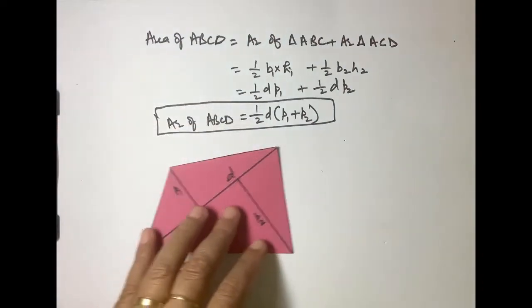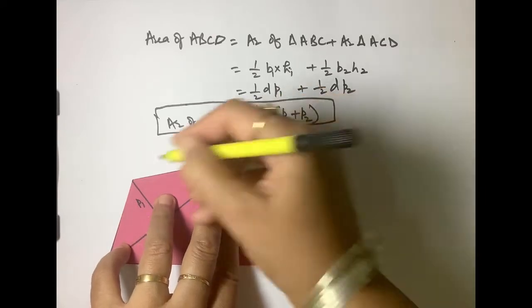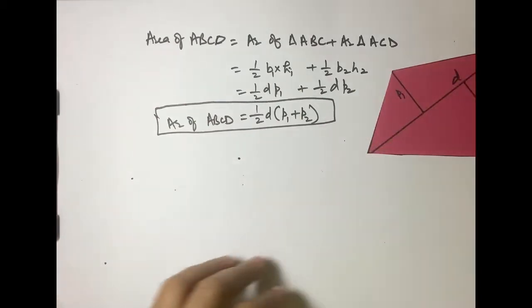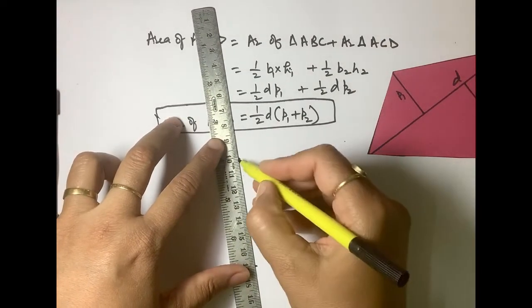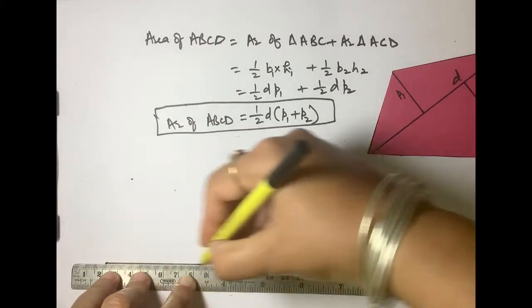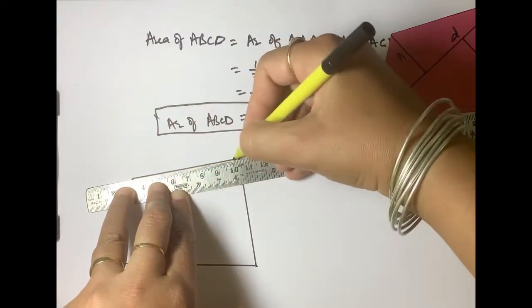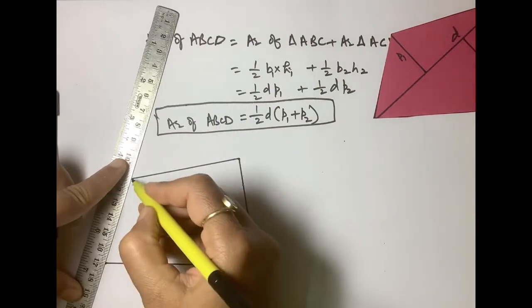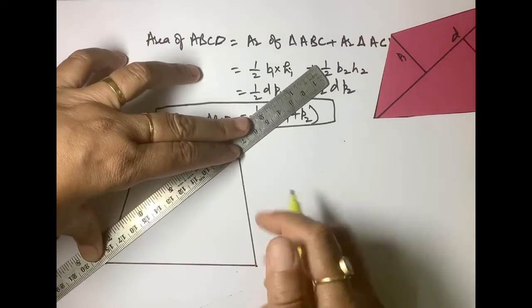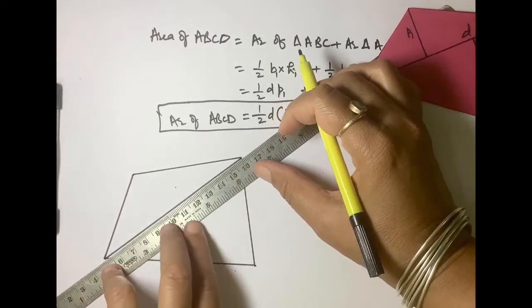Now we are going to draw one more quadrilateral to show exactly equal quadrilateral. You mark diagonal as well as offsets also.